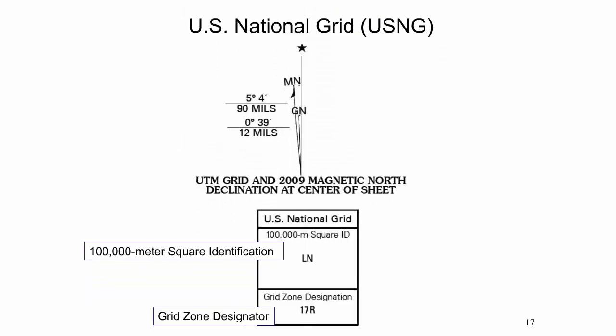Below the declination diagram, the map collar provides the U.S. National Grid reference box. The U.S. National Grid divides the geographic area into 6-degree longitudinal zones designated by a number and 8-degree latitudinal bands designated by a letter, adopted from the military grid reference system and also used for UTM grid zones. The zone description is found in the grid zone designation, such as 17R. Each grid zone is further covered by a scheme of 100,000-meter squares, where a two-letter pair identifies each square, such as LN. It may also occur that a 100,000-meter square is partially located on multiple grid zones.